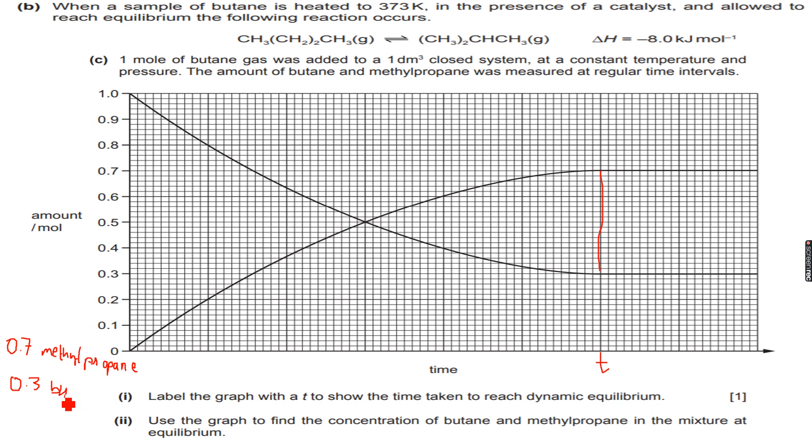So by looking at the graph, it's 0.3 and this is 0.7. Yes, it has to be 0.7 and 0.3 because 0.7 plus 0.3 is 1 which was the initial amount that we had added. The concentration of methylpropane will be 0.7 upon 1 because the volume is 1, concentration is moles upon volume, which is equal to 0.7 mole per dm³.